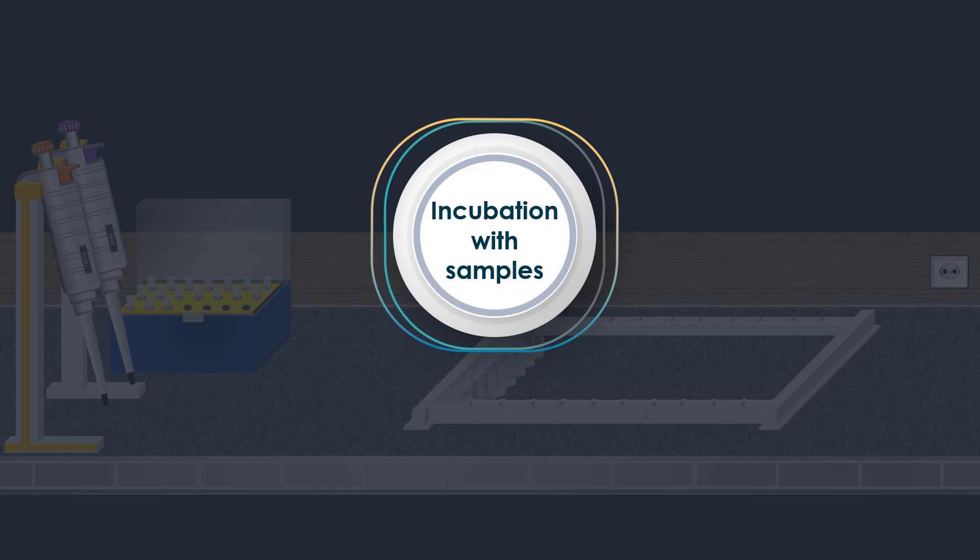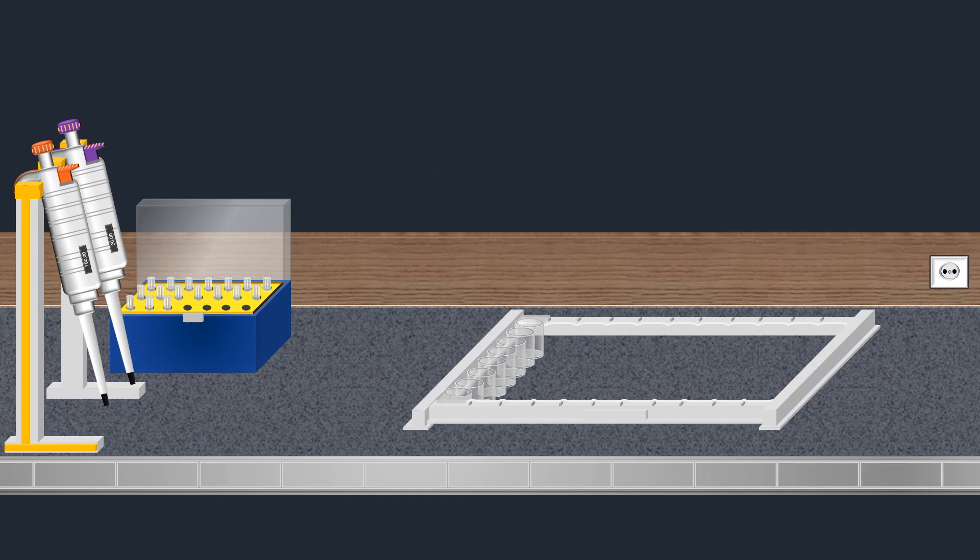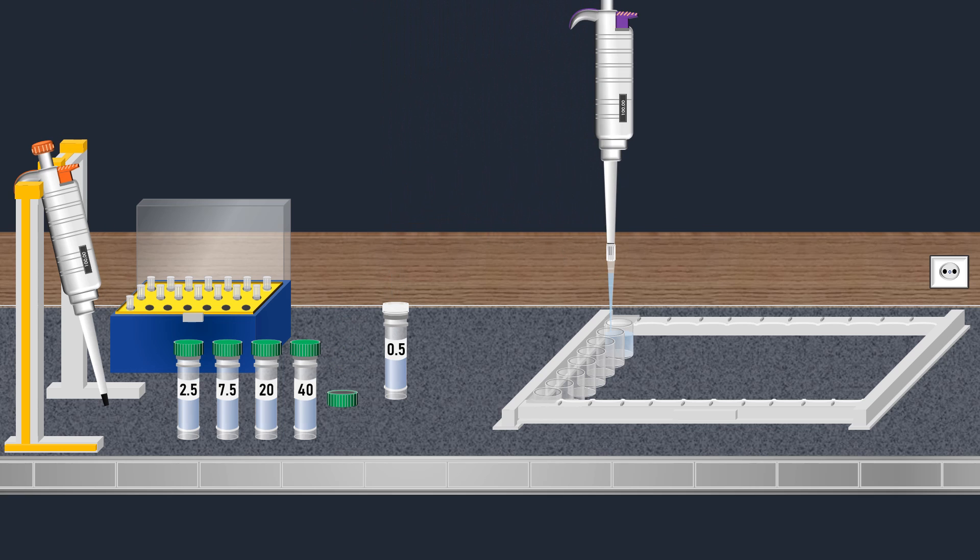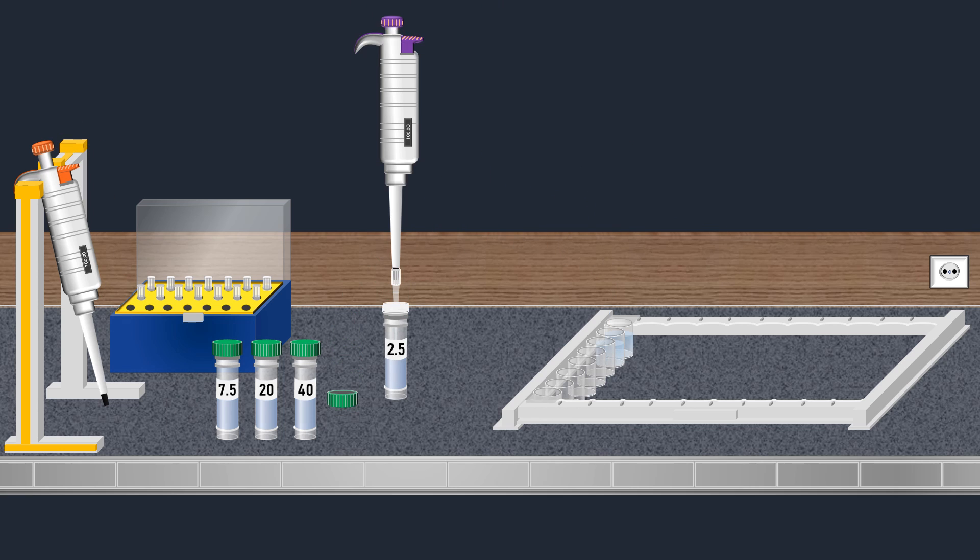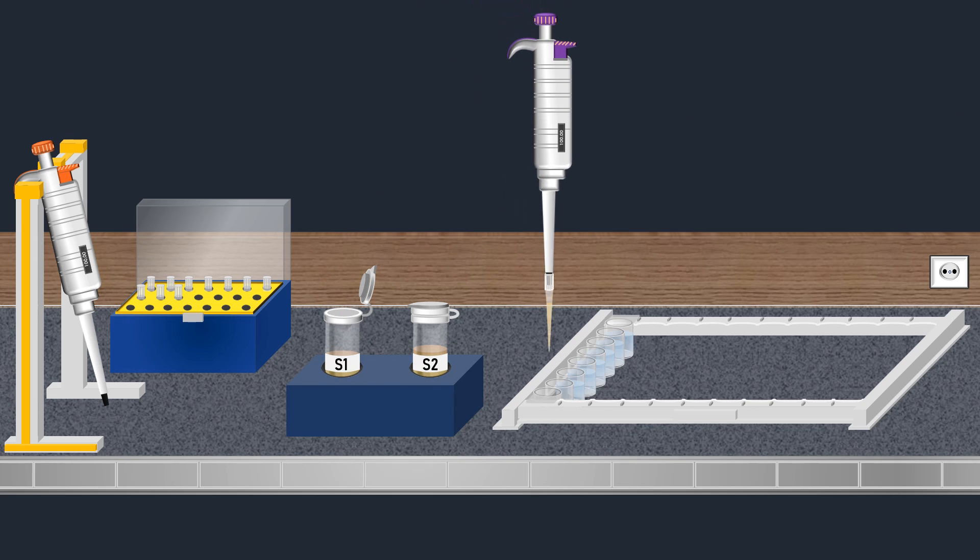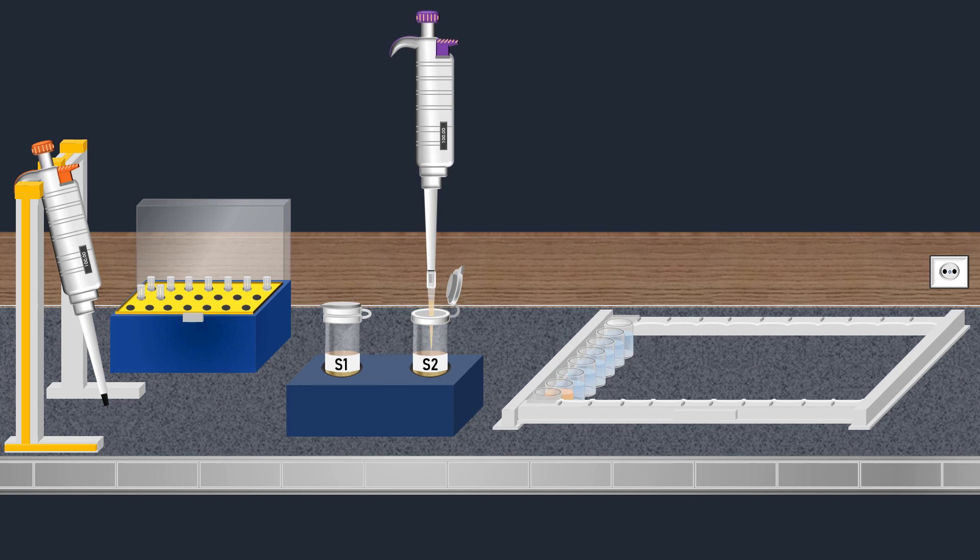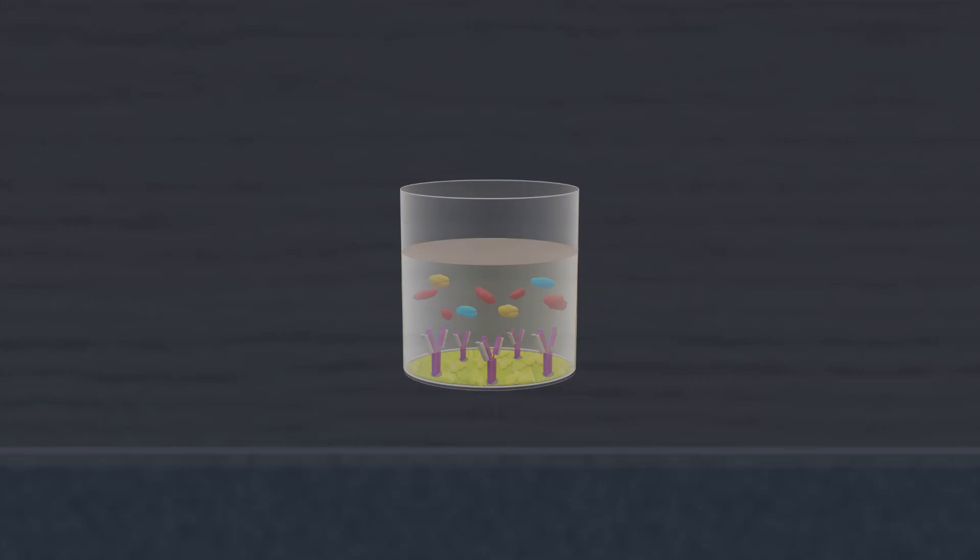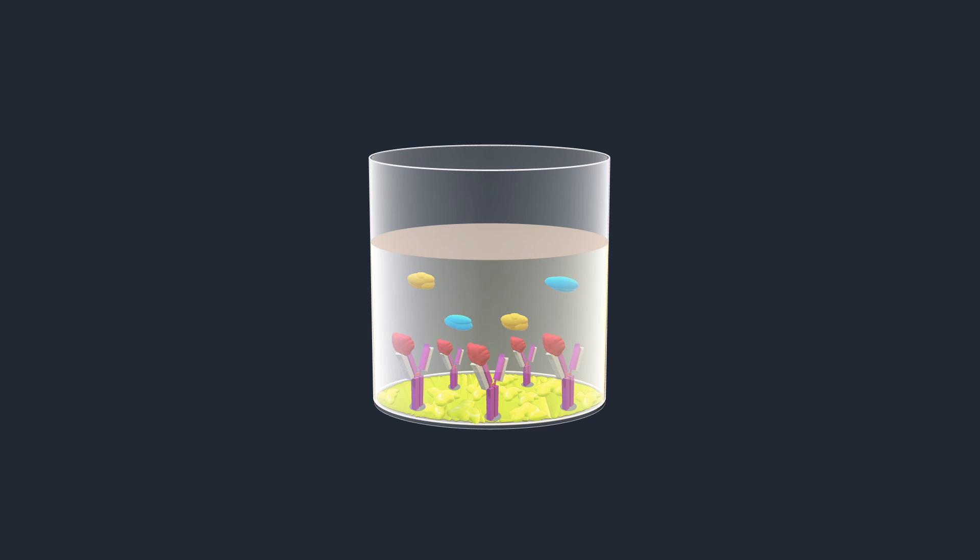After the blocking step, the subsequent stage involves incubation with the samples. Prior to loading the samples, standard solutions with various known concentrations of TSH are added into the wells. These standards serve as reference points to establish a quantification curve for measuring the TSH levels in the samples. Following the addition of standard solutions, each sample is carefully placed into its corresponding well. Next, the well strip is covered and incubated. Incubation facilitates the binding of TSH present in both the samples and standards to the immobilized antibodies.